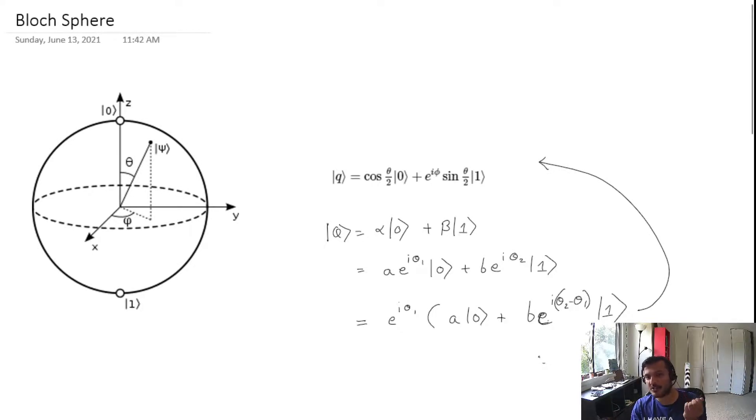Also notice for states zero and one, rotation about the z-axis does nothing because these states remain as is because they lie on the z-axis.